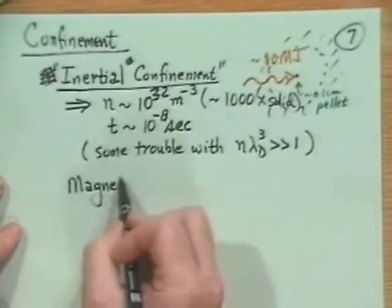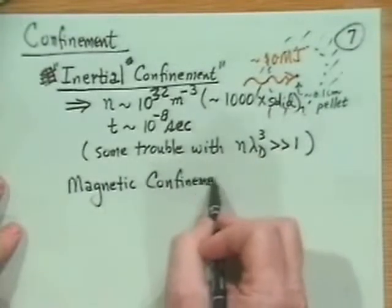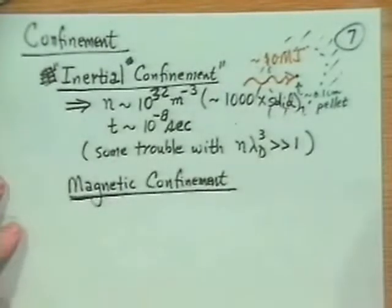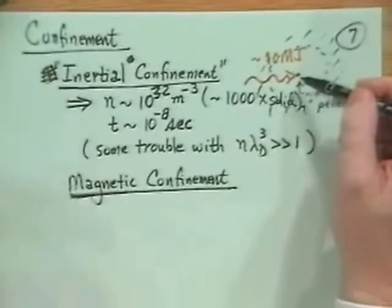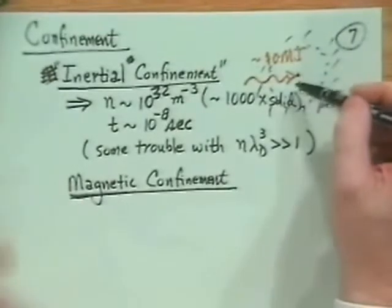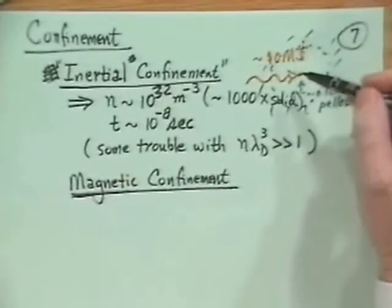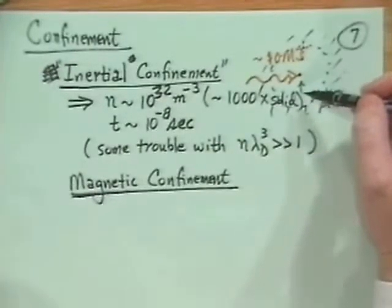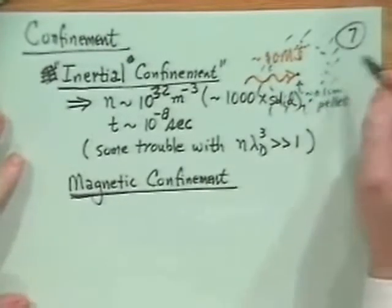With the inertial confinement, are you continually pulsing this one little pellet? Yeah, the idea is you'll drop in a pellet once every 1 to 10 hertz, 1 to 10 per second, and then you pulse the laser. You let it drop down here, just when it gets in the right position, then you pulse the laser and zap that particular pellet. It's somewhat like an internal combustion engine, but you have to have a new pellet each time.